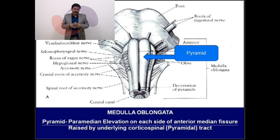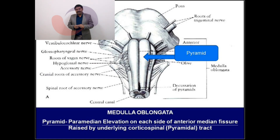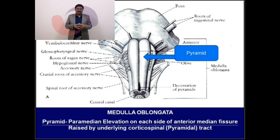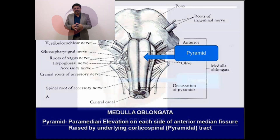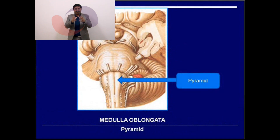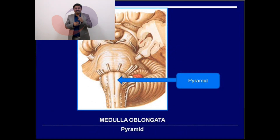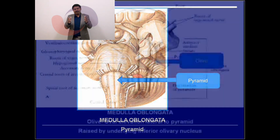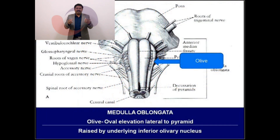Lateral to the anterior median fissure is an elevation known as the pyramid. This pyramid is raised by the underlying corticospinal tract, also called the pyramidal tract. The name 'pyramid' comes not from its shape but from the underlying fibers of the pyramidal tract.